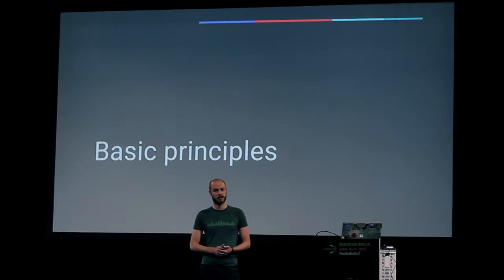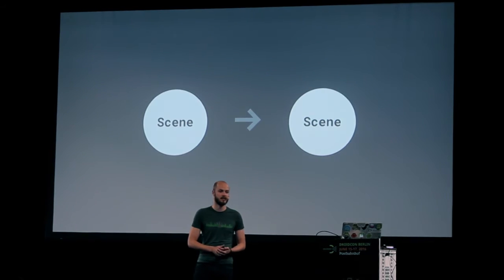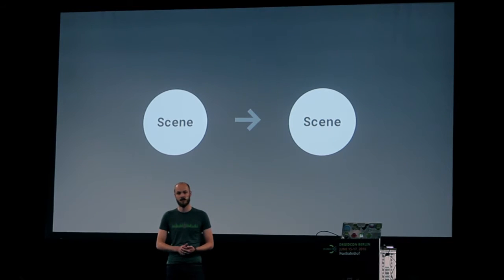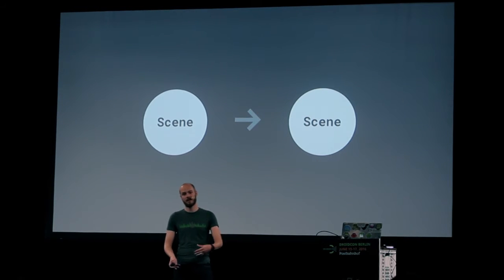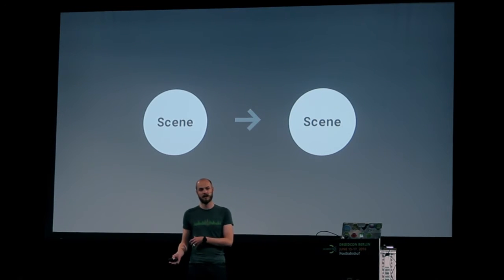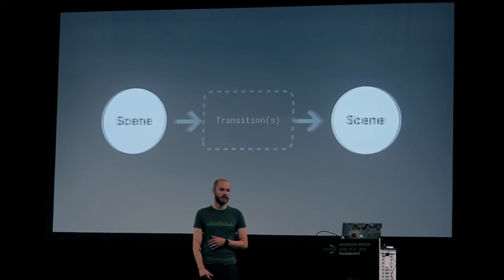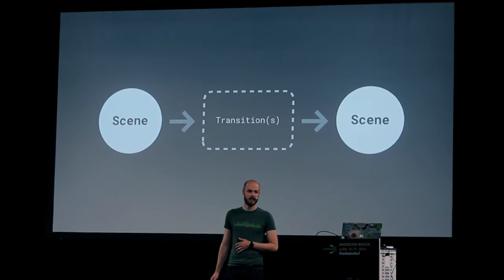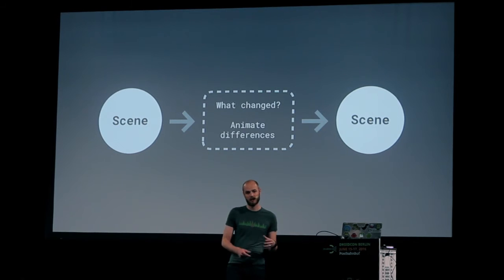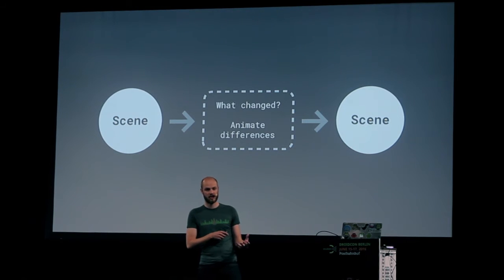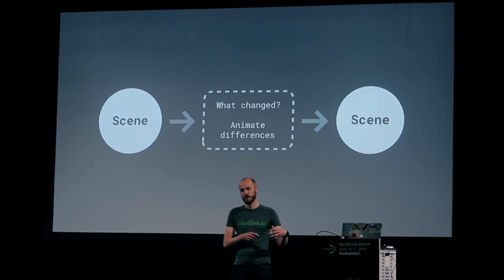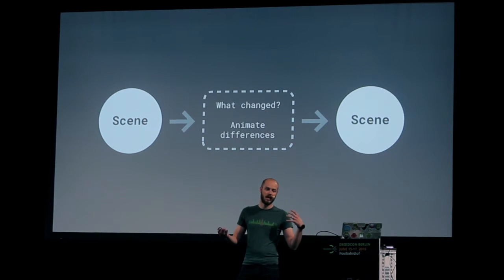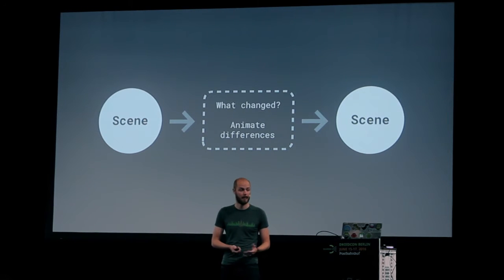First off, the basic principles. What is a transition? A transition kicks in whenever there's a scene change. For example, if you switch activities or if you replace one fragment with another, but also if you want to change layouts. A transition is what happens in between that. It basically covers what has changed, so from scene A to scene B, and then it animates these differences.